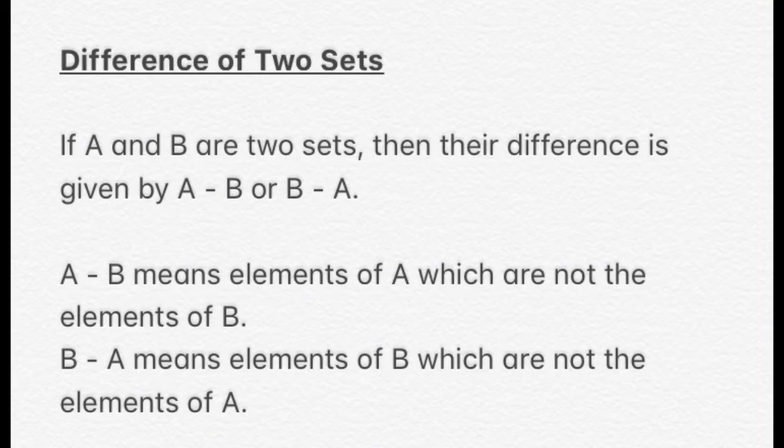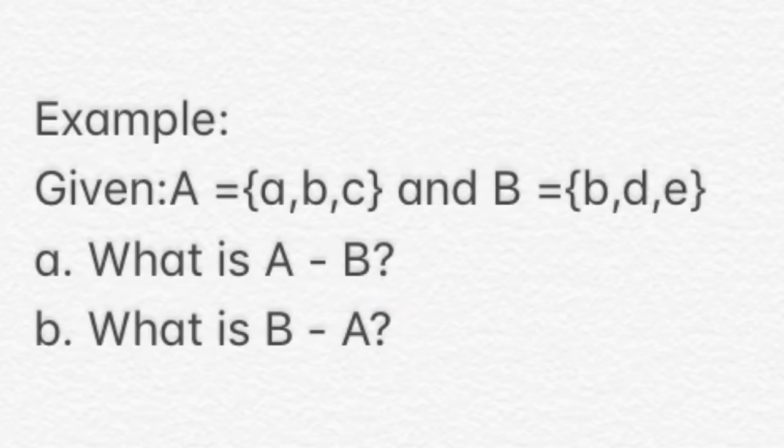Example: Given that set A contains elements a, b, and c, and set B contains elements b, d, and e. For the first question, what is A minus B? We're going to look for the elements of set A which are not the elements of B. So A is {a, b, c} and B is {b, d, e}. The elements found in A that are not found in B is the set containing elements a and c.